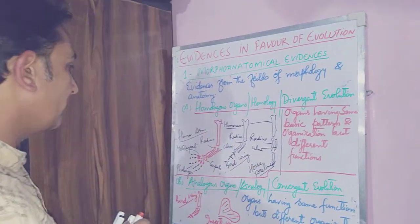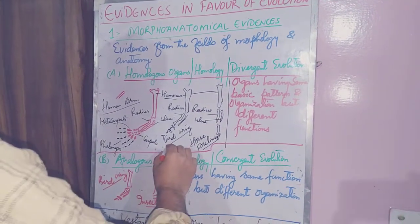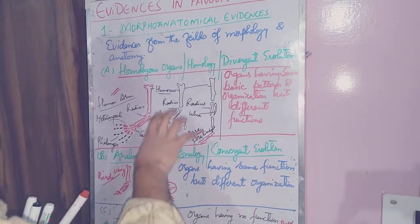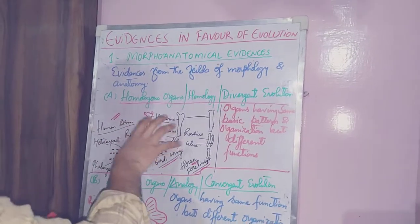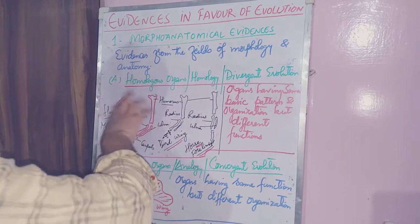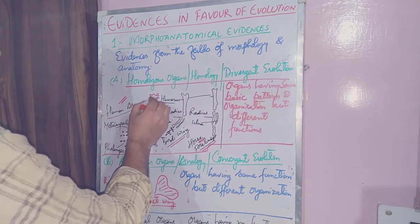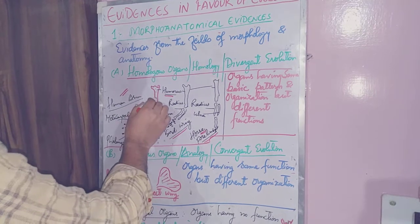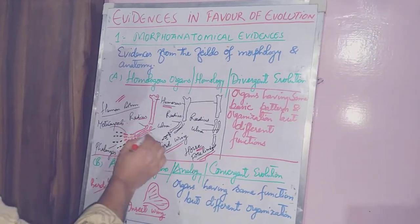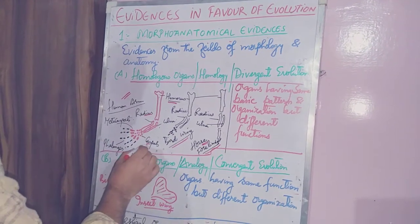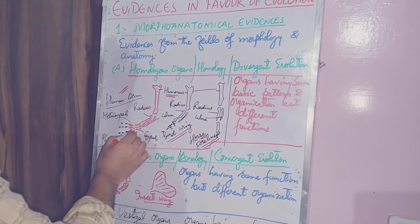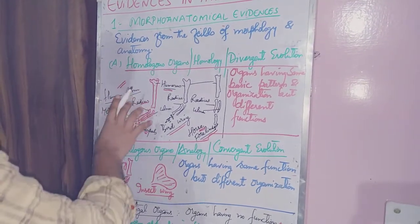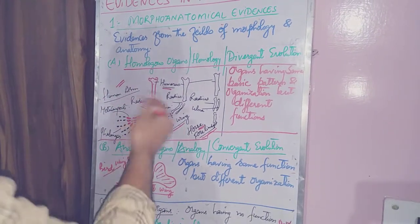I have drawn three diagrams: the human arm, the wing of a bird, and the forelimb of the horse, with bones labeled in each. In the human arm, the upper part contains the humerus. In the forearm there are two bones — the radius and the ulna. In the wrist there are carpals, in the palm there are metacarpals, and in the digits there are phalanges.